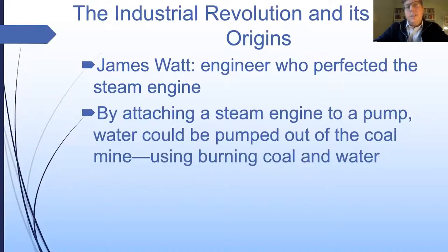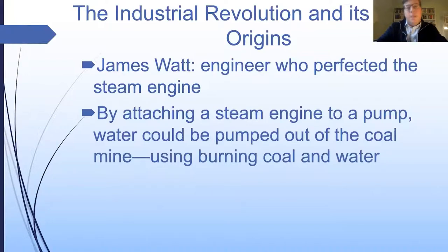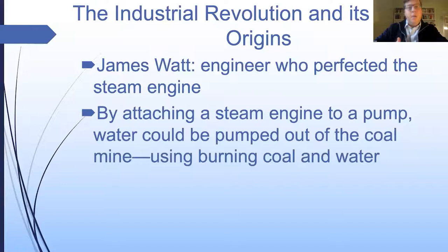James Watt's big contribution was figuring out both of those things. He figured out a way to make the steam engine much more efficient, so it would retain its power over a long period of time. He also realized that the problem coal miners had — being unable to pump water out of flooded mines because the task was too hard for human muscles — could be solved with his improved steam engine. He made a lot of money and became very famous selling his steam engine to coal mine operators, who attached it to a pump. By burning coal in the engine, the pump operated at a steady, forceful rate, pumping water out of the mines and allowing them to mine more coal.